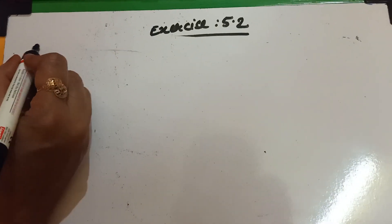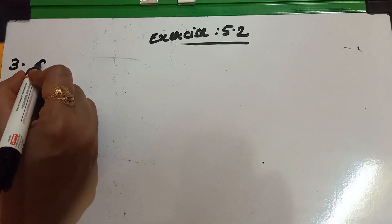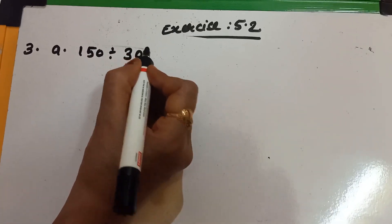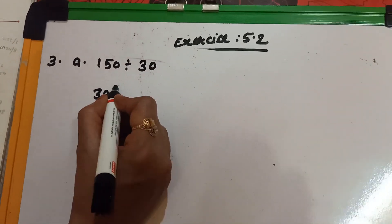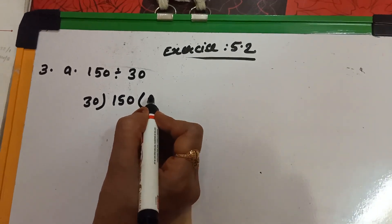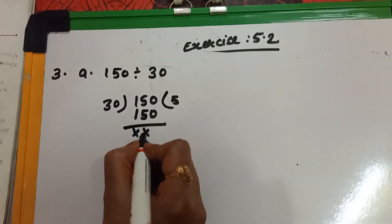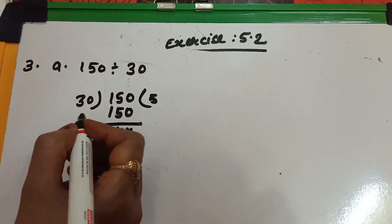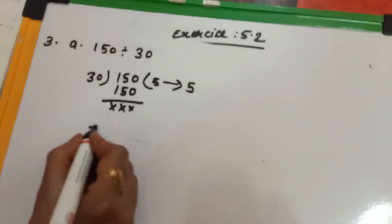Now look carefully at question number 3 — find the quotient. I am taking question (a): 150 divided by 30. So 30 into 150; 3 fives are 15, so 5 times 30 gives 150. The quotient is 5, and that is the answer.